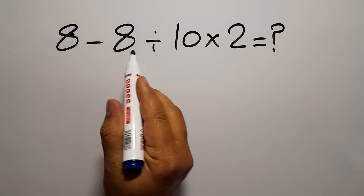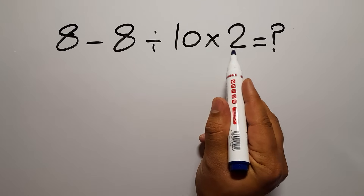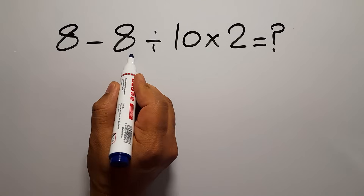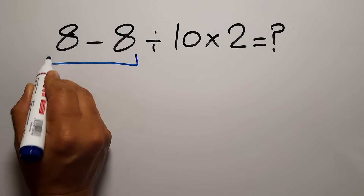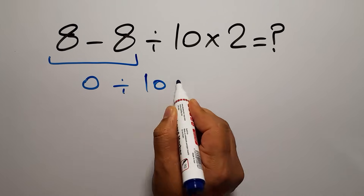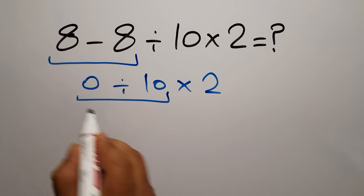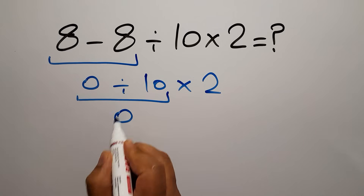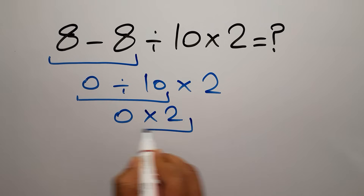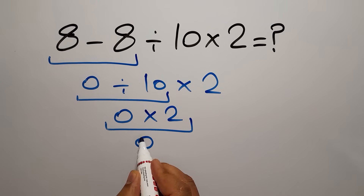8 minus 8 divided by 10, then times 2. 8 minus 8 is just 0, so 0 divided by 10, then times 2. 0 divided by 10 is 0, and 0 times 2 is 0. But this answer is not correct.